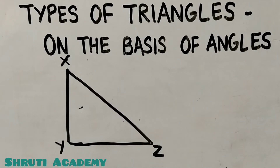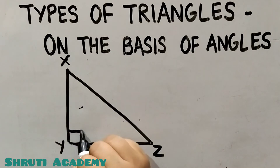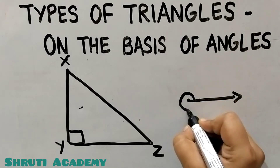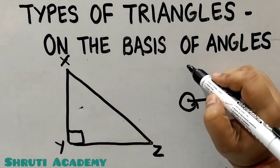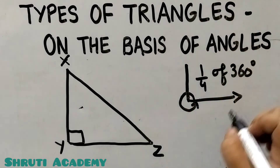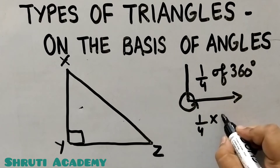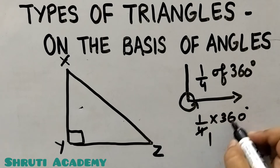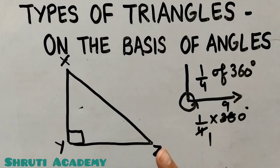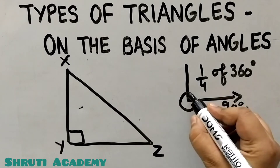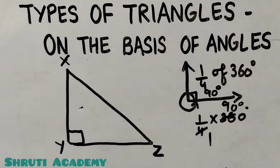Now this triangle is XYZ. This angle — how many degrees is it? A full point turns 360 degrees, so if we make a ray, it is one fourth of 360 degrees. One fourth of 360: we multiply — four times 36 is 36, cancel the numbers — gives us 90 degrees. So one fourth of 360 degrees is 90 degrees, meaning this angle is 90 degrees.